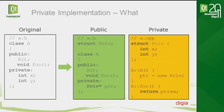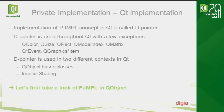There can also be different implementations of the private class for different platforms. In order to use the private pointer on the public side, we need to tell the compiler something about the type. In this example, we can use a forward declaration to the private class. That was a generic example — now let's look at Qt and how private implementation is used there.